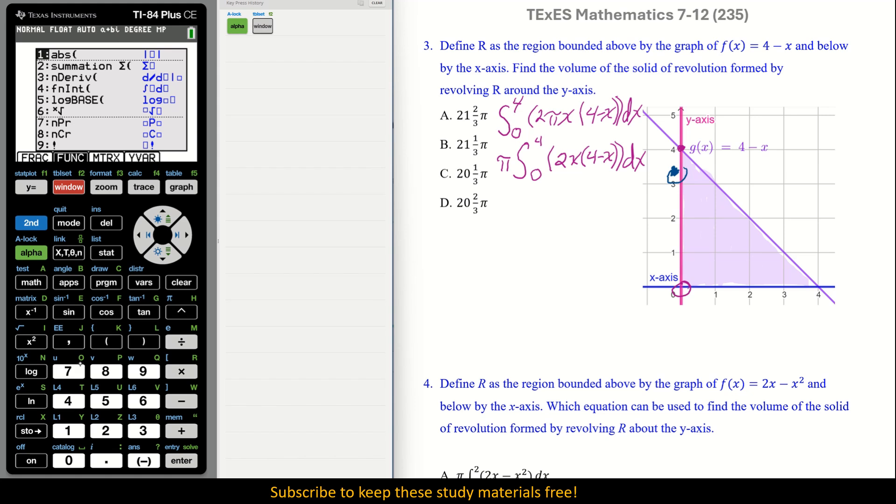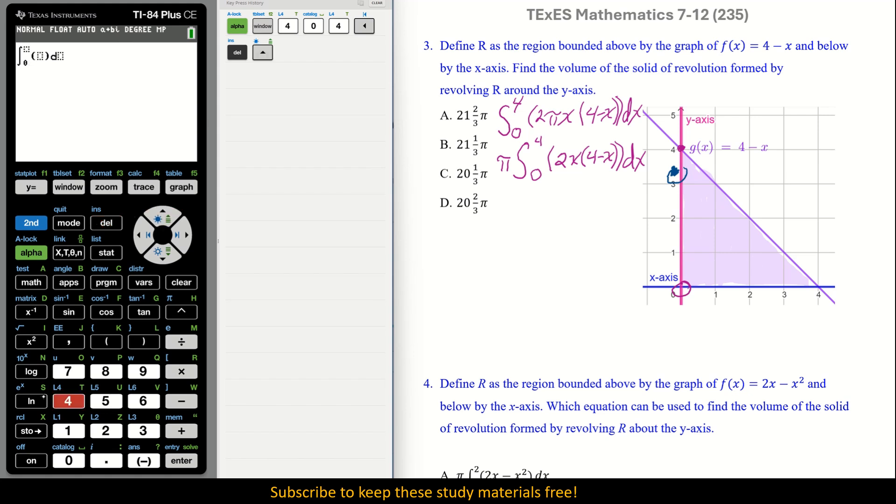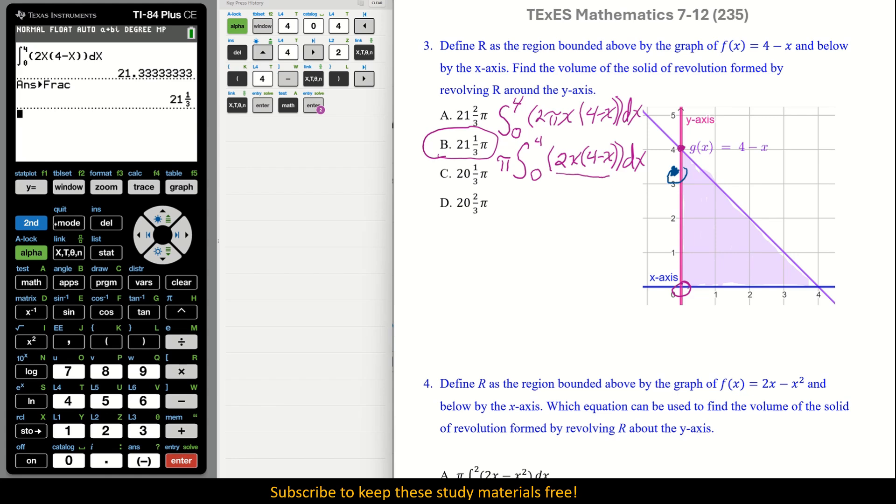So we have alpha window, number 4, 0 to 4, go up. Now arrow over and put in these values. So we have 2x parenthesis 4 minus the x, another parenthesis, and then we go over and do our dx. Now let's push enter, and now we can push math. Fraction is what we need, enter, enter, and that gives us what we need. If we look in our calculator, how I have this set up. Yes, it is option B.